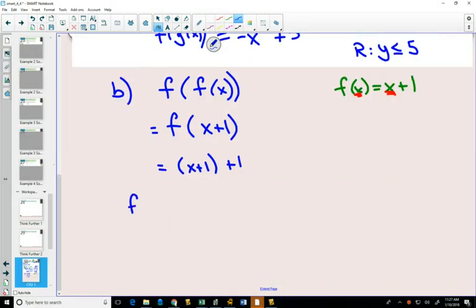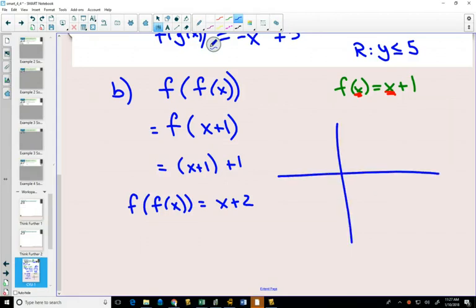So, our explicit equation for f of f of x is x plus 2. And if you drew that y-intercept of 2, a slope of 1, the domain and range will be all real numbers for both the domain and the range.